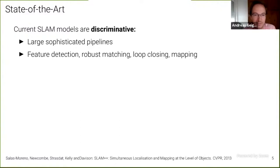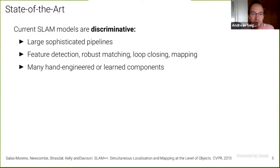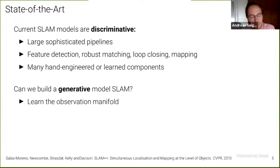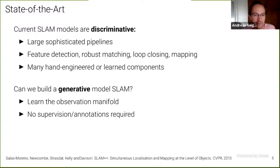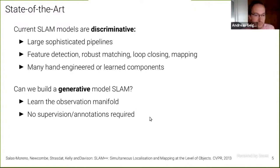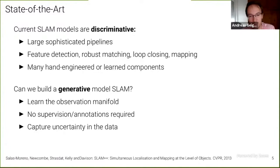One work that I particularly like — already seven years old — is SLAM++ from Andrew Davison's group, where they took simultaneous localization and mapping to the object level, trying to find an object-level description of the scene, which has the potential to scale to much larger scenes and compress representations much further. All current SLAM systems, I would argue, are mostly discriminative — relatively large, sophisticated pipelines with many components such as feature detection, robust matching, loop closure detection, mapping, and so forth. Many of these components are either hand-engineered or learned on independent loss functions.